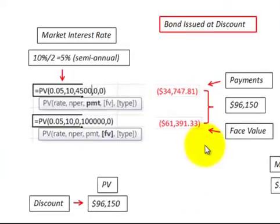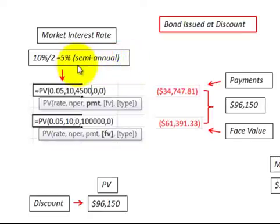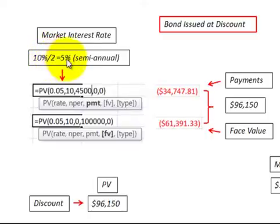Let's look at how we did that. For the payments, you can use your financial calculator. In this case, I use the present value function in Excel, where I put in the interest rate. The interest rate we use here is the market interest rate — what the market is valuing bonds at that time. In this case, it went up to 10% from the stated rate of 9%, and we divide that by 2 to get 5% for the semiannual interest rate.